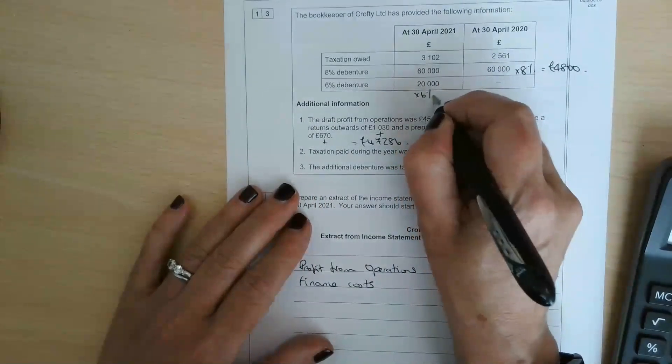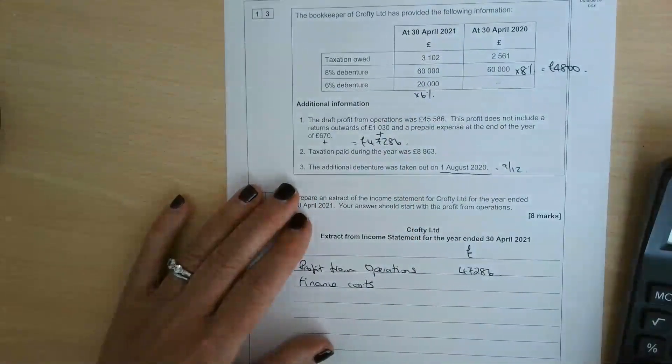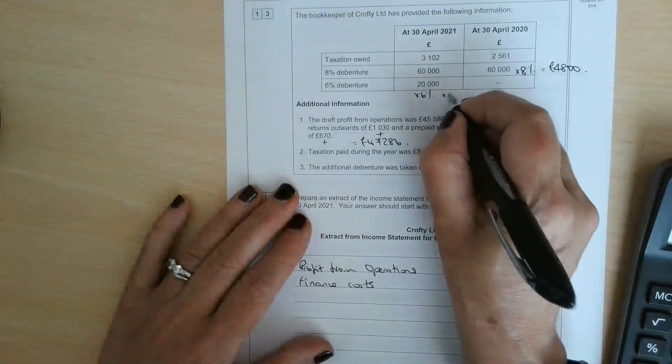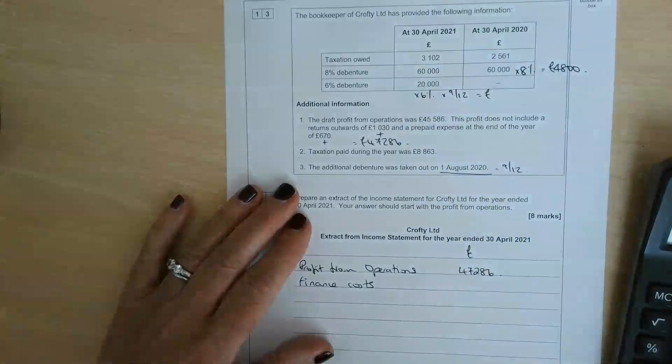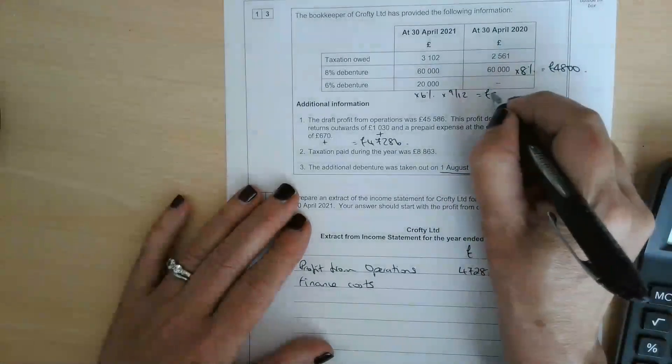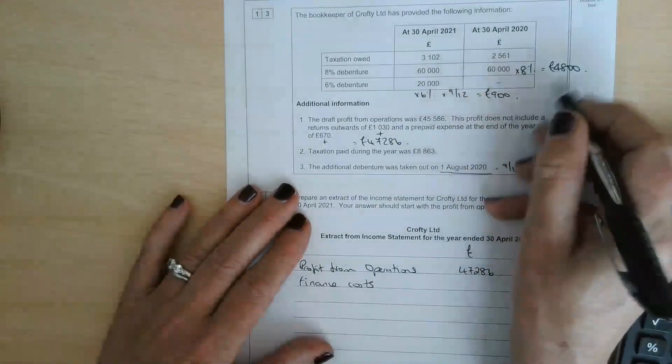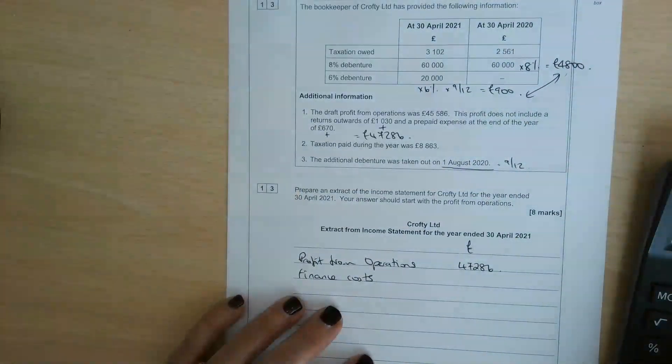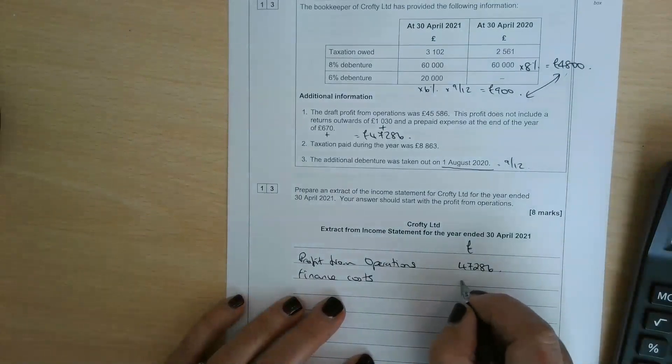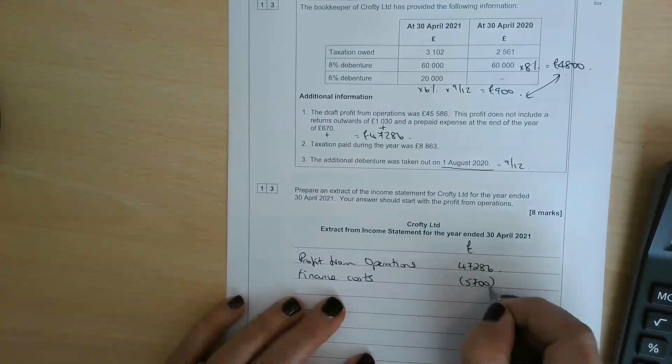So £20,000 times 6% is £1,200, times 9 over 12 gives you £900. The actual amount of finance costs is the total of these two: £900 plus £4,800, which is £5,700.